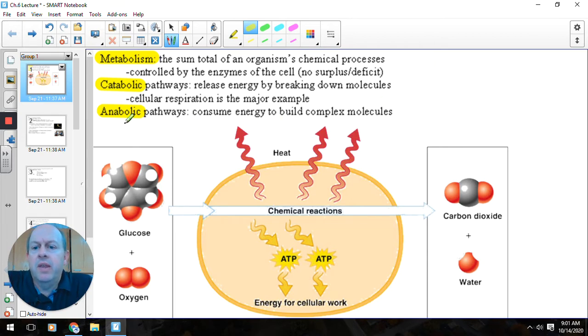In anabolic processes or pathways, what we're going to do is we're going to build complex molecules. So like photosynthesis would be an example of this. One of the ways you might be able to remember this is like anabolic steroids are the steroids that we use to build muscle. And so these complex muscle proteins are anabolic then. So just some terminology so far.